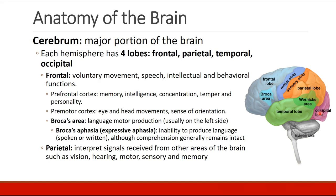Each of the two hemispheres has four lobes: the frontal, parietal, temporal, and occipital lobes. The frontal lobe controls voluntary movement, speech, and intellectual and behavioral functions. The prefrontal cortex is responsible for memory, intelligence, concentration, temper, and personality. The premotor cortex controls eye and head movements and sense of orientation. Broca's area is in the frontal lobe and is responsible for language motor production, usually on the left side. A patient with Broca's aphasia will have the inability to produce language — either spoken or written — although comprehension usually remains intact.